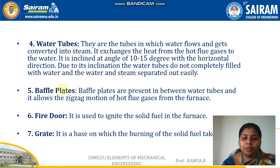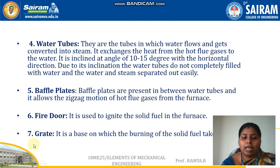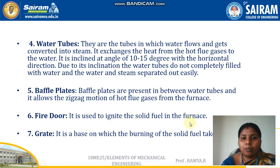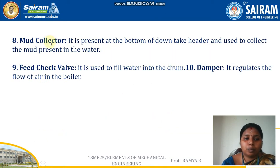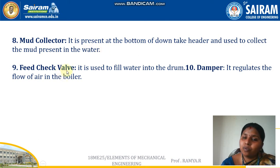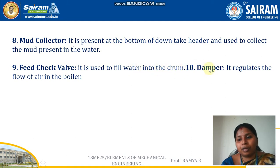Baffle plates are kept between the water tubes and allow a zigzag motion of hot flue gases from the furnace. The fire door is used to ignite the solid fuel. The grate is the base on which burning of solid fuel takes place. The mud collector is present at the bottom of the header and collects mud present in the water. The feed check valve is used to fill water into the drum, and the damper regulates the flow of air in the boiler.